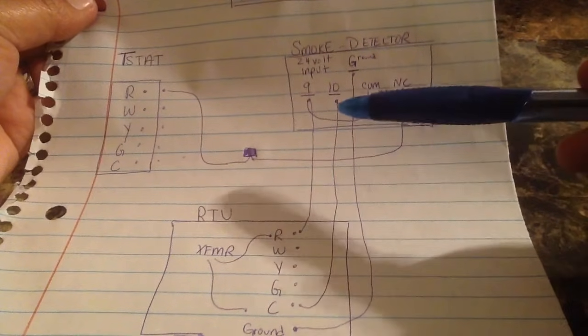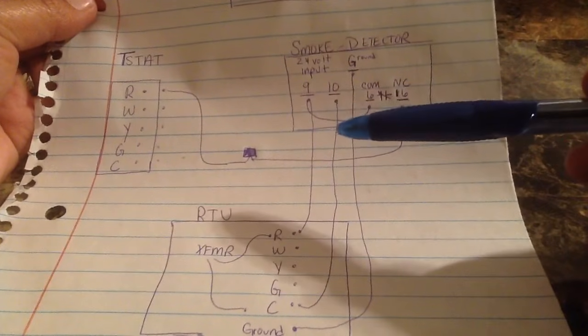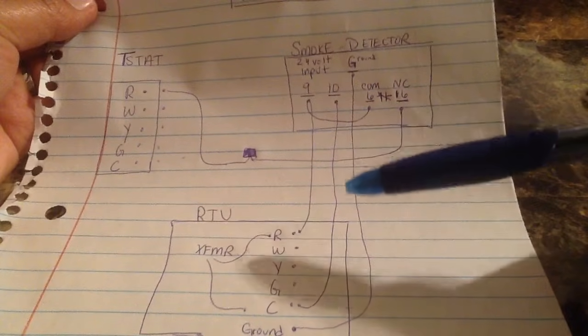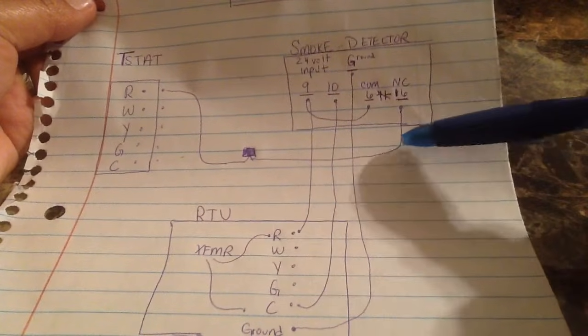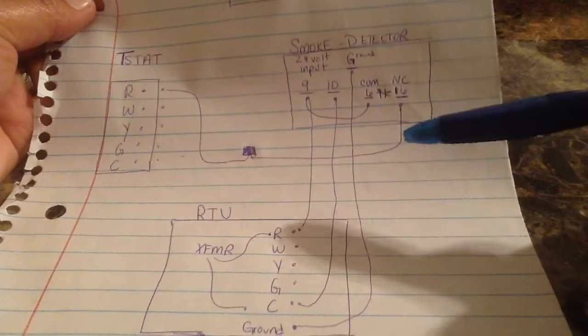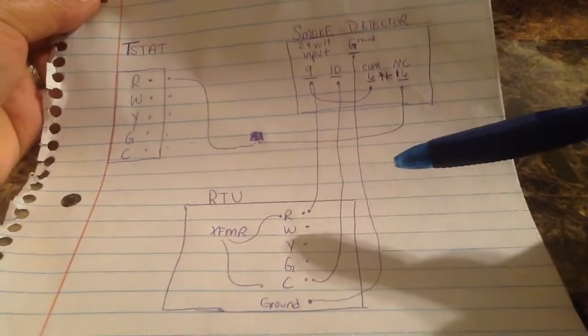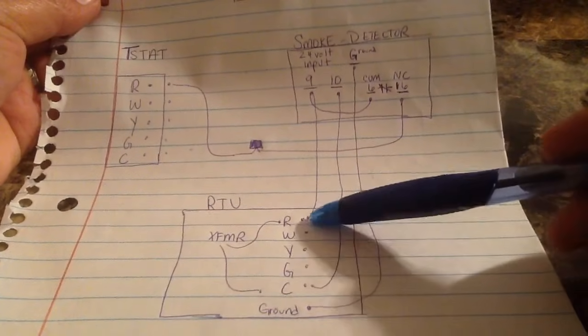So one wire is going to go to nine, the other wire is going to ten, which is your R and C. Your third wire is coming from sixteen and then your fourth is your ground.